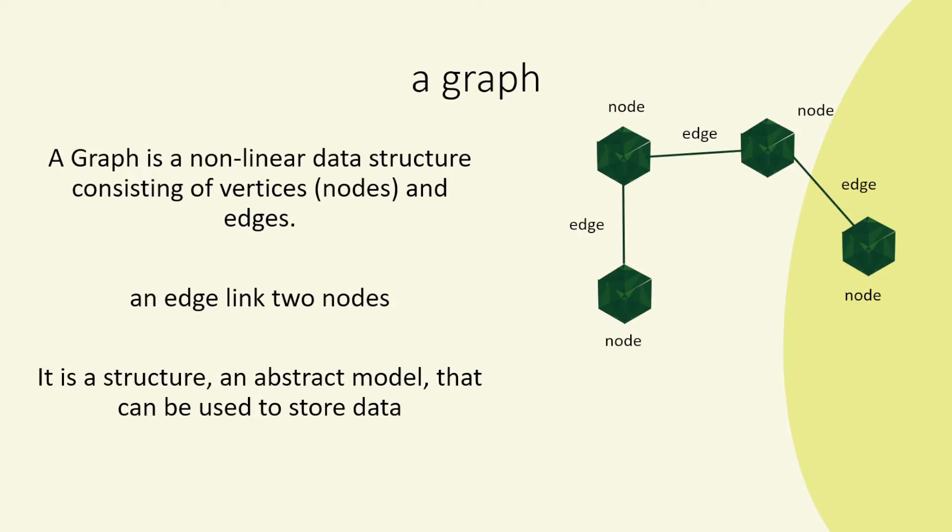A graph is a non-linear data structure consisting of vertices and edges. I tend to use the word node, so nodes and edges. Here we can see we have nodes and edges which are lines that connect the nodes. So an edge basically connects two nodes.